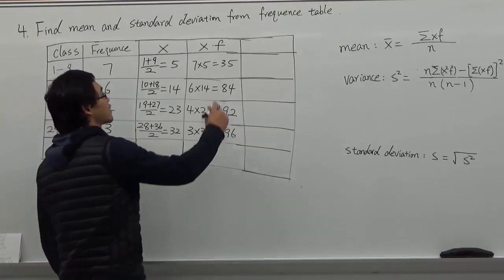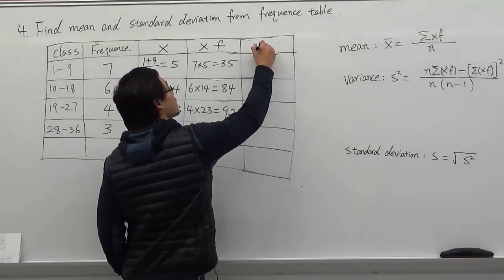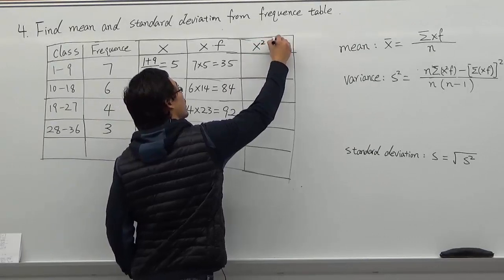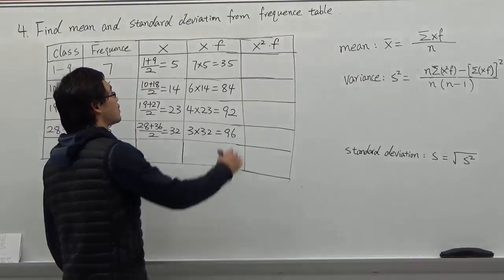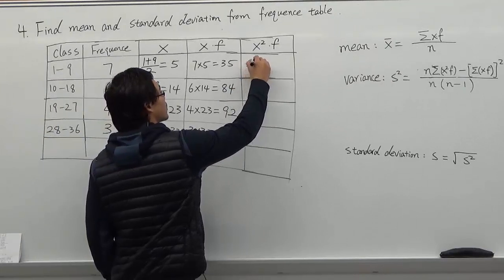And then the next column is x squared times f, or x squared f.